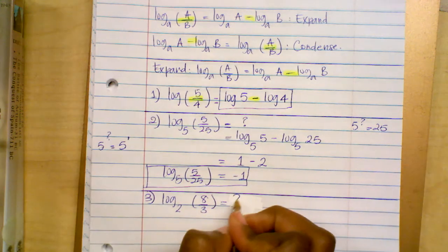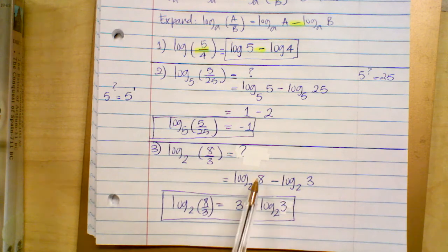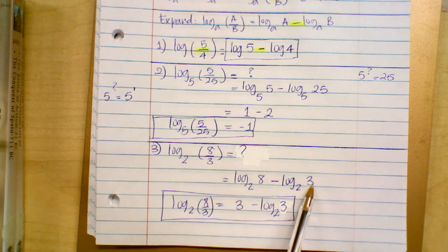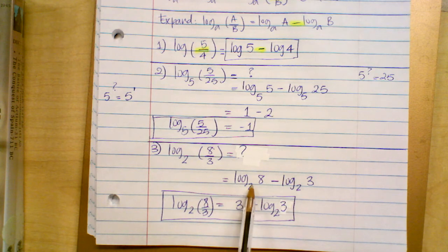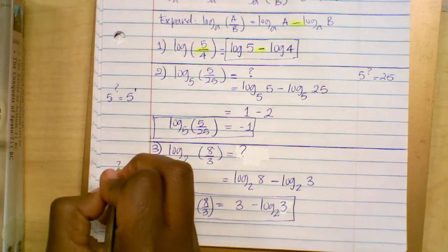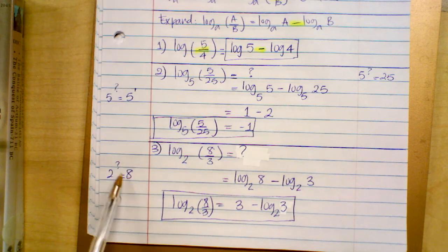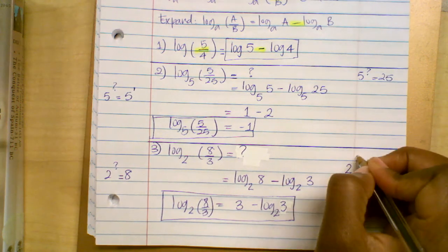Please pause the video and expand this log and evaluate if you can. For log base two of eight: what exponent do you give to base two so that the answer is eight? Two times two times two is eight, so the exponent is three. I'm going to leave log base two of three alone because you cannot divide that in your head — the exponent you give to base two to get three is not a whole number.